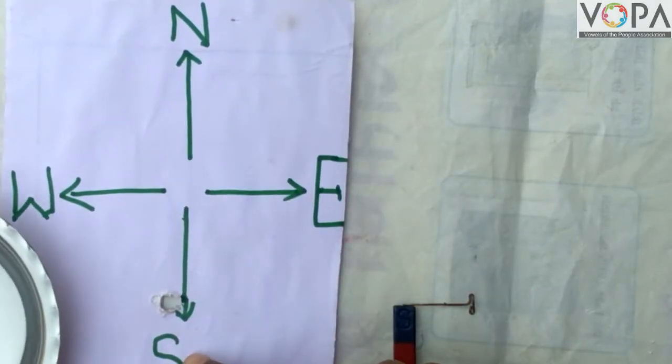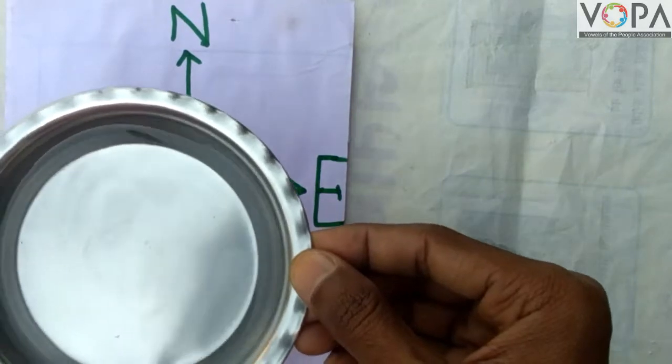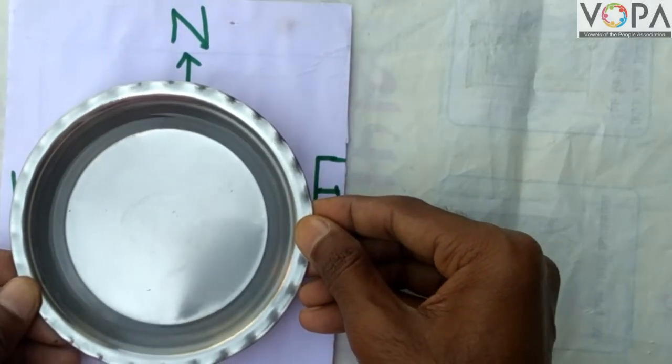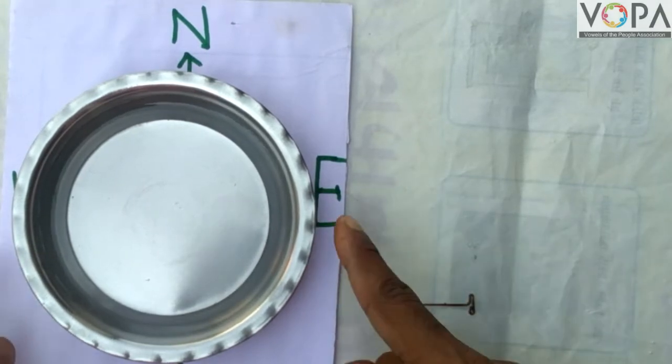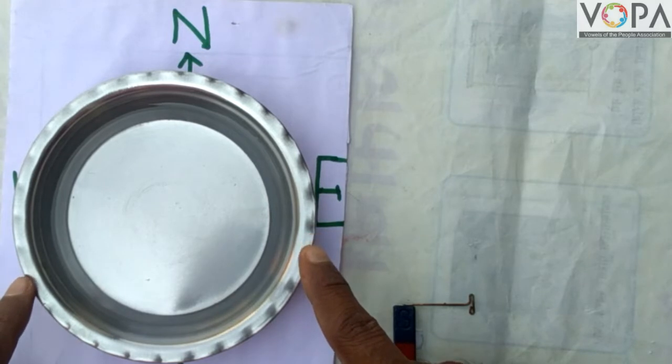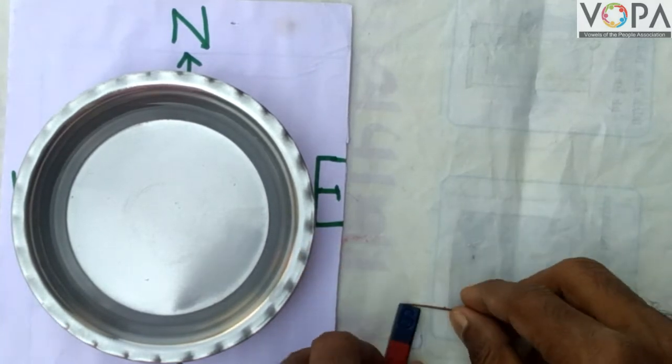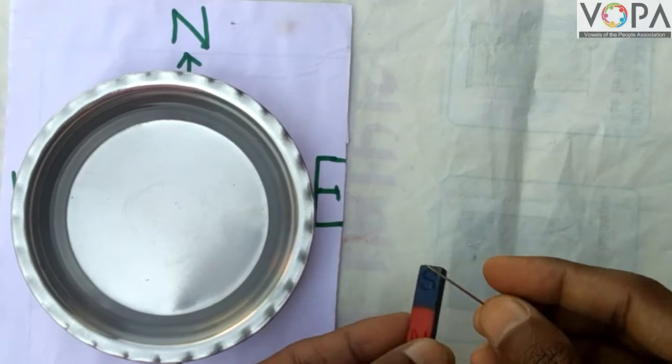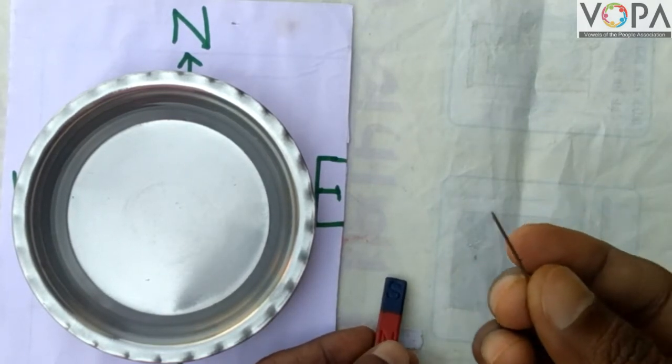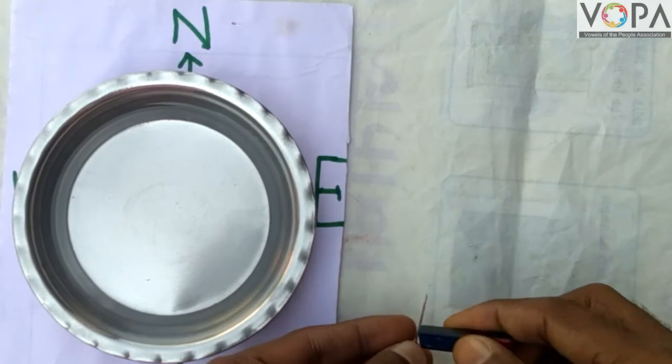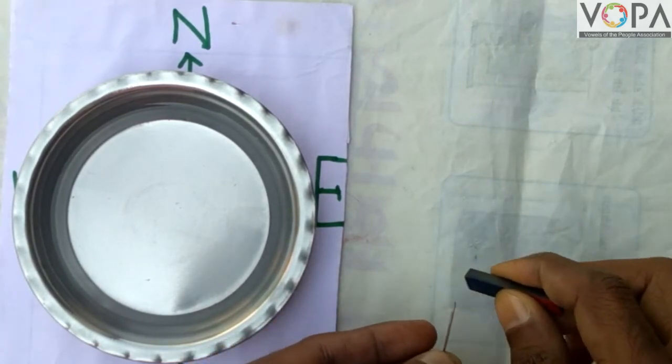Place a pot filled with water at the center of the cardboard. Take a magnetized needle. Now, here this is the needle - this is the magnetized needle because I have created magnetism by rubbing a magnet on it.